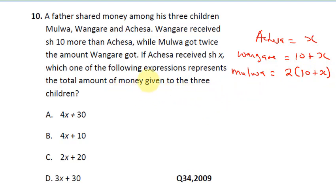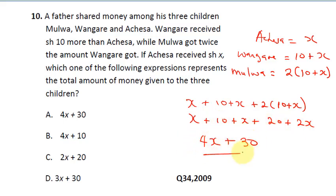Which one of the following expressions represents the total amount the three got? Let's sum it up: x plus 10 plus x plus 2 times (10 plus x). So this will be x plus 10 plus x plus 2 times 10 plus 2 times x, which will be 2x. So this will be x plus x plus 2x, summing the algebra that's 4x, plus 10 plus 20, that will give us 30. So our final answer is 4x plus 30.